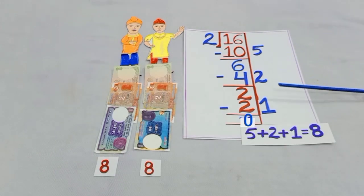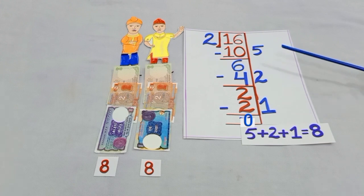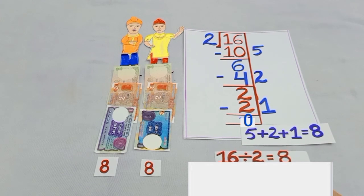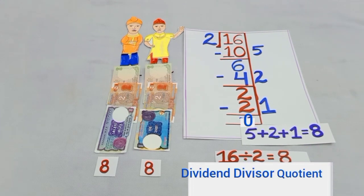So, from here, we get 5 plus 2 plus 1 is equal to 8. That means, each brother of Kamal got 8 8 rupees. So, that means, when 16 is divided by 2, the result is, yes, 8, where 16 is dividend, 2 is divisor and 8 is quotient.